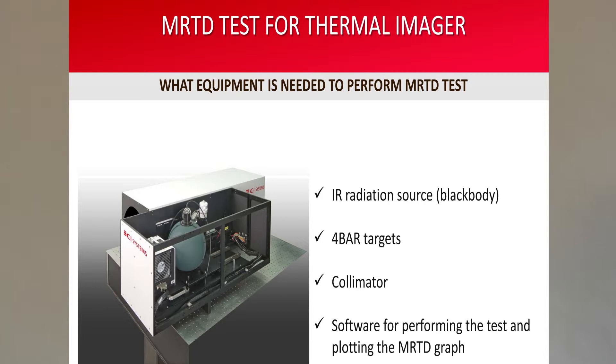To perform MRTD tests, you need the following setup. First, an infrared radiation source, better known as a blackbody. Second, four-bar targets — I will explain about how to select them in just a moment. Third, a collimator. And fourth, the software for performing and plotting the MRTD graph.